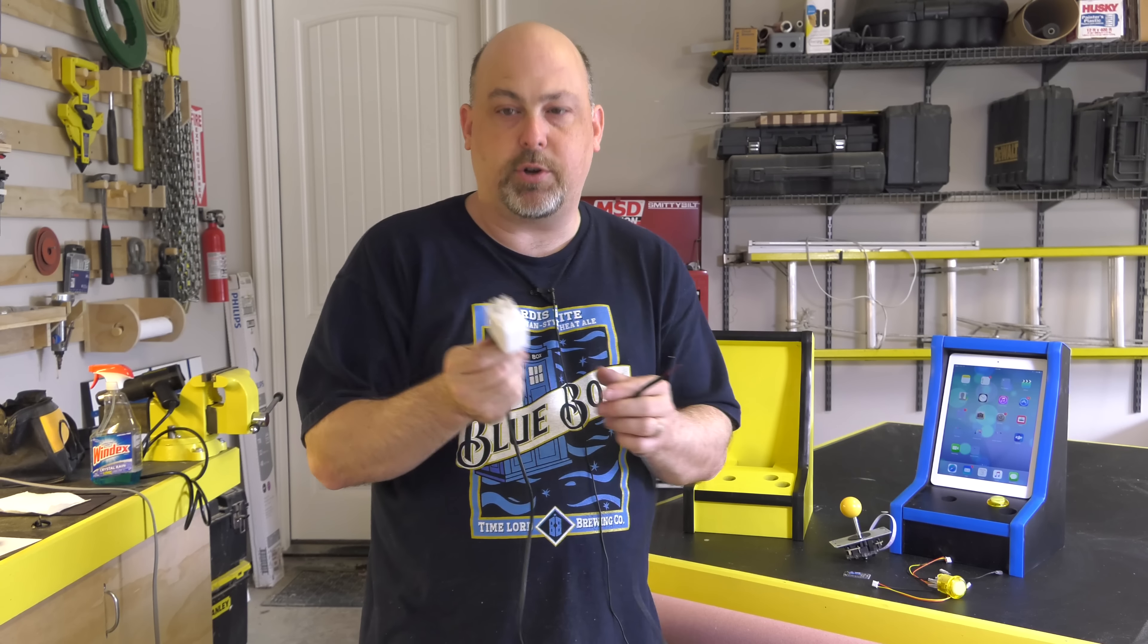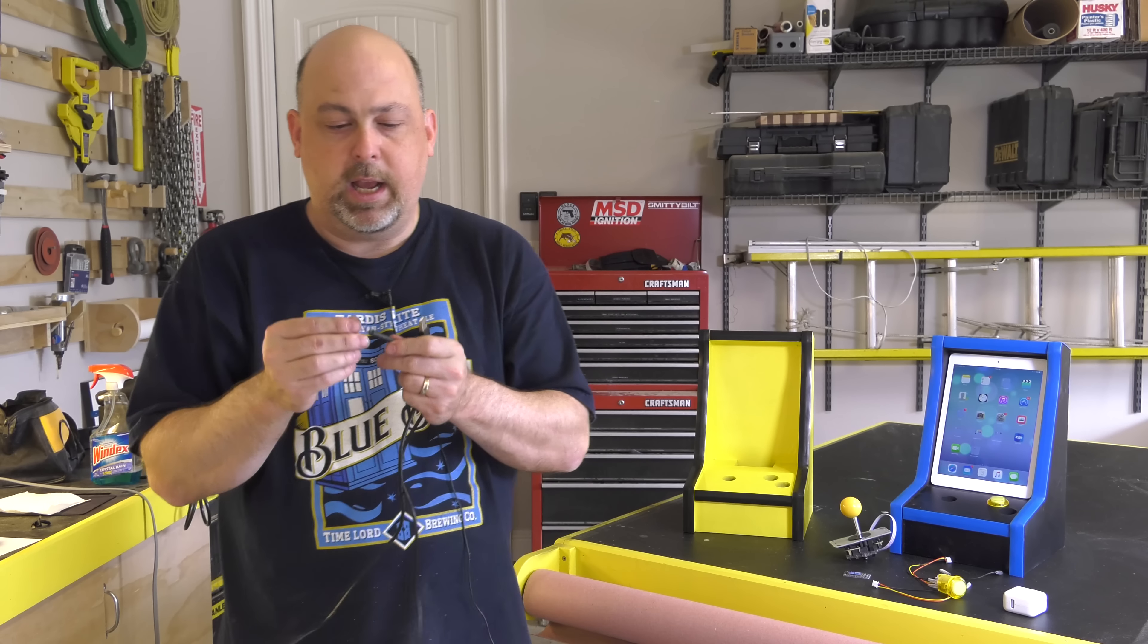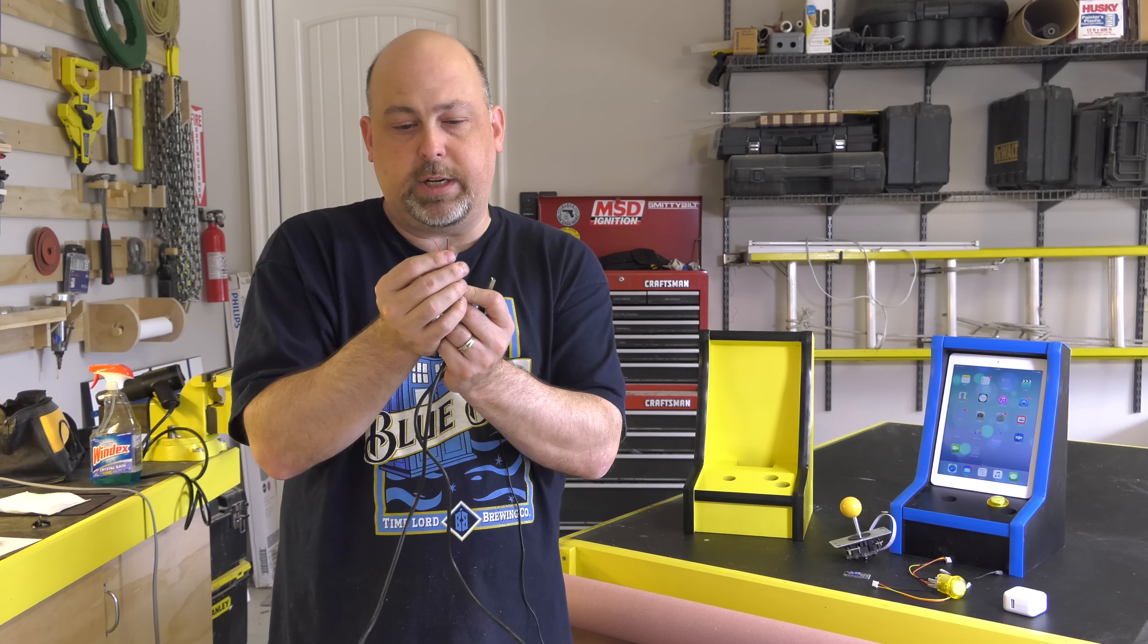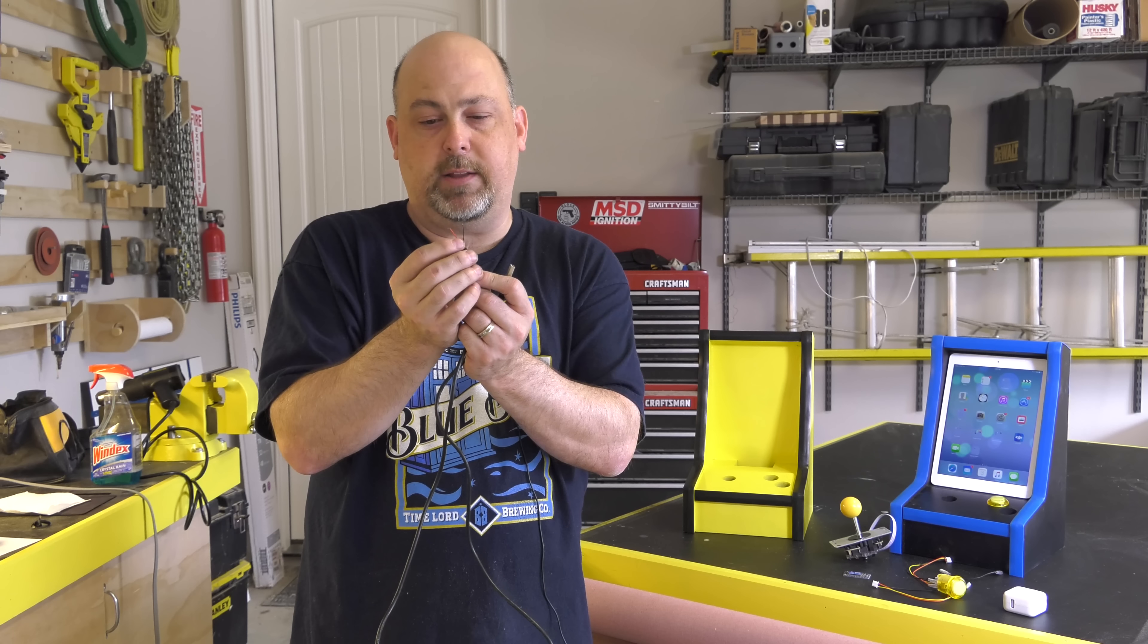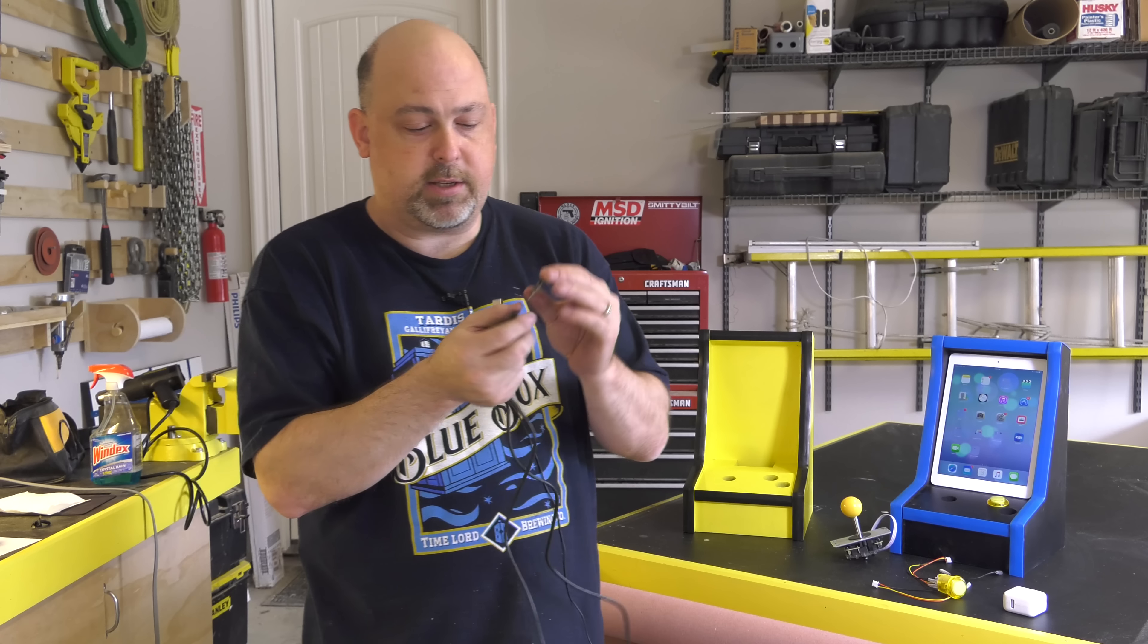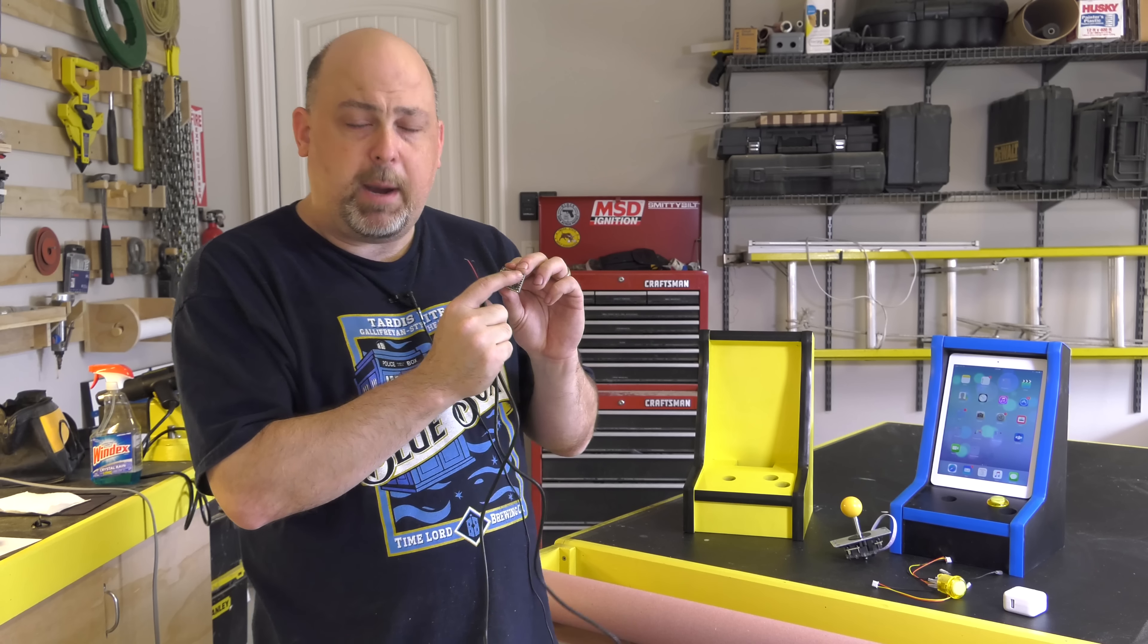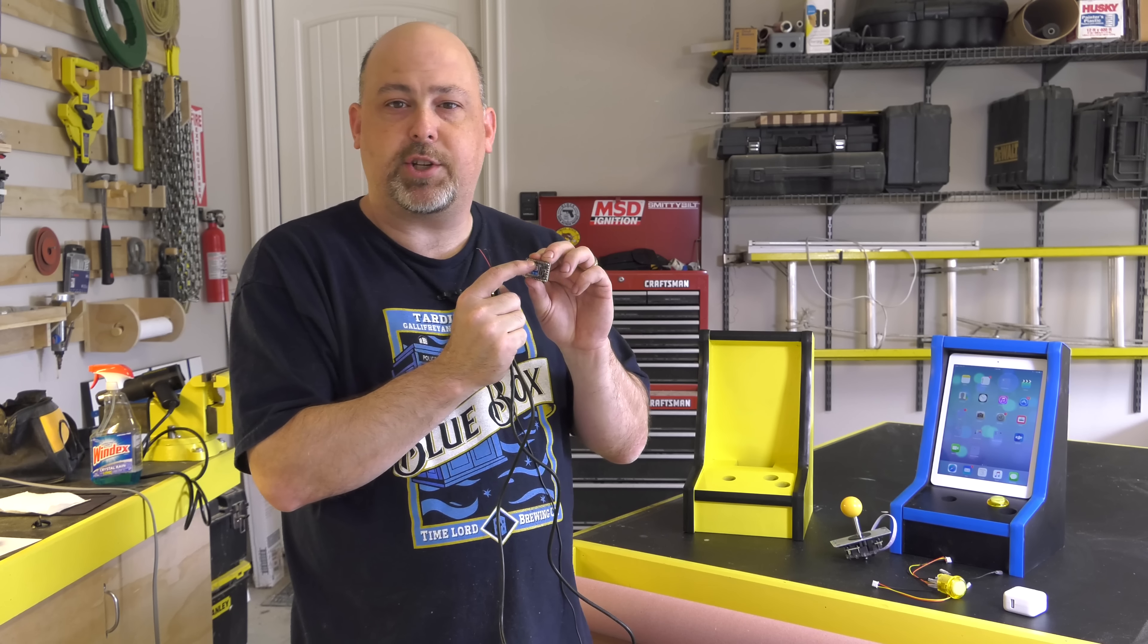Cut the other end off and there'll be four wires. The ones you're interested in are the black wire and the red wire. These will provide power to this little Bluetooth module.